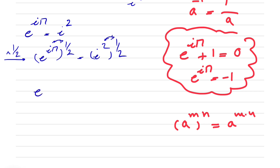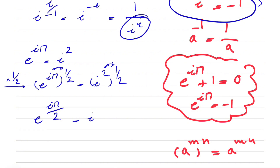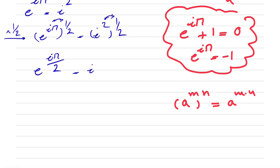On the left side we have e to the power of i pi divided by 2, and on the right side we have i to the power of 2 over 2, or just i. In order to build what we have — i to the power of i — we're going to raise the power of i on each side. So we basically have e to the power of i pi over 2, all to the power of i, is equal to i to the power of i.